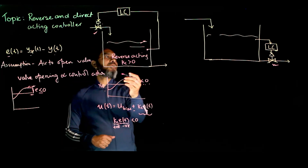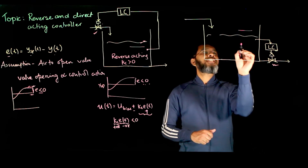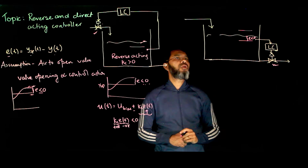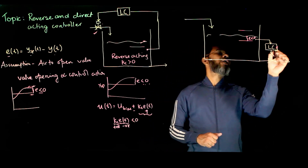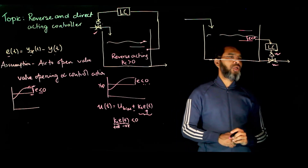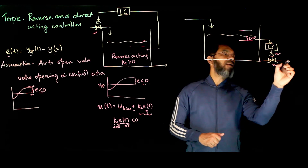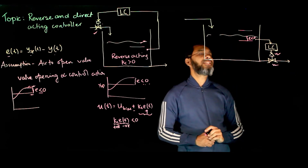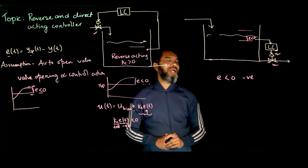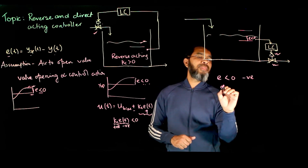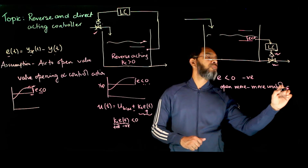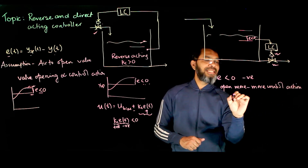Now compare with the outlet flow case. If the desired value is lower than the current value, the error is negative — the current value exceeded the desired value. In that case, you need to open the valve more, increasing the control action to drain more water so that the level comes back to the desired value. This is what is called direct acting.